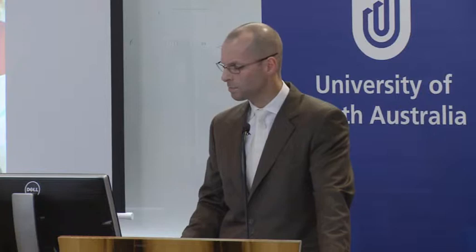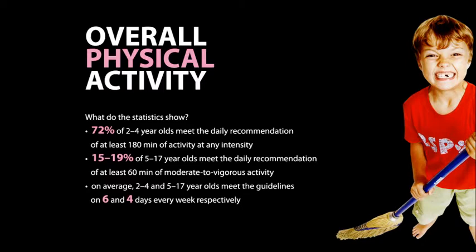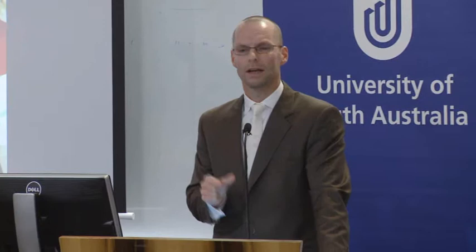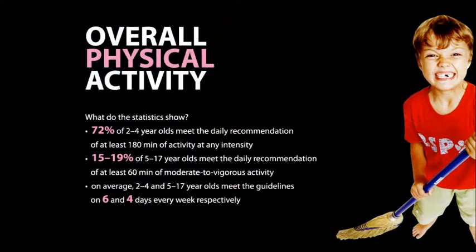The key statistics show that about three quarters of 2 to 4 year olds meet the daily recommendation of 180 minutes, but only about 15 to 19 per cent of 5 to 17 year olds meet the daily recommendation of 60 minutes. On average the younger and older children meet the guidelines on 6 and 4 days every week respectively. Because one group represents a small slice of children doing reasonably well and another large slice doing really poorly, we assigned a grade of D minus to overall physical activity.